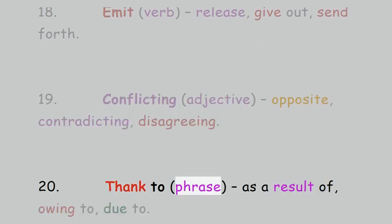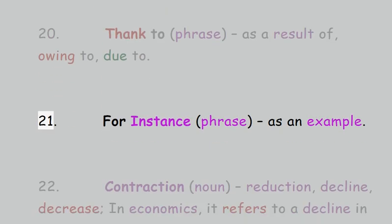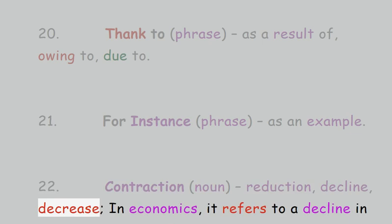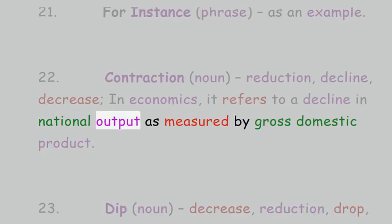20. Thanks to, phrase: as a result of, owing to, due to. 21. For instance, phrase: as an example. 22. Contraction, noun: reduction, decline, decrease. In economics, it refers to a decline in national output as measured by gross domestic product.